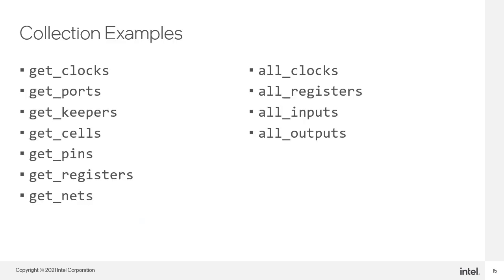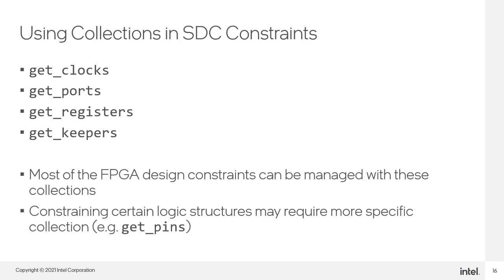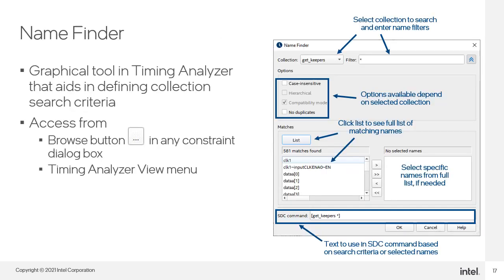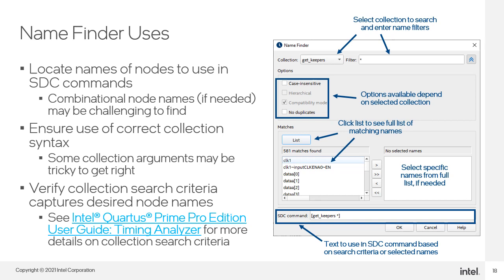Here are some more examples of collection commands for SDC. These four collection commands are probably the most popular ones to be used, and most FPGA design constraints can be managed with one of these four collection commands, which can cover constraining from I/O to synchronous elements, synchronous elements to synchronous elements, and synchronous elements to output I/O. In Timing Analyzer, there is a collection search tool called the Name Finder. This tool accesses the entire timing netlist that Timing Analyzer has read in. Use the Timing Analyzer View menu or the Browse button in any constraint dialog to access this tool. This tool has a list of collection commands that you can use to find objects in the timing netlist. The filter field allows you to be as general or specific as you want. Every option that you select will further elaborate the SDC command found at the bottom of the Name Finder dialog window.